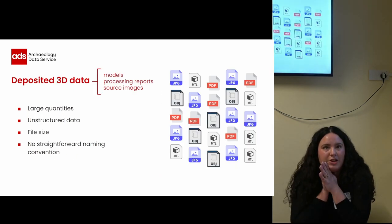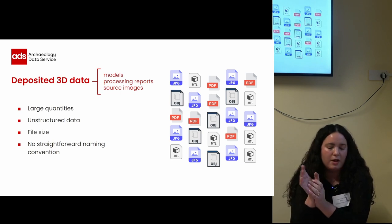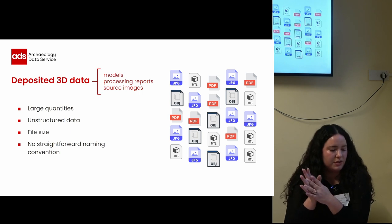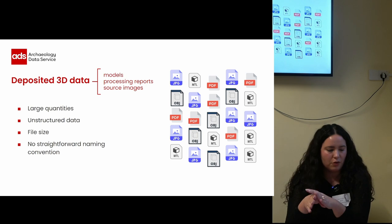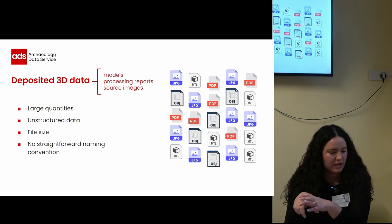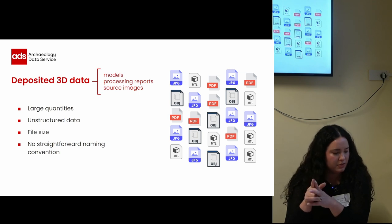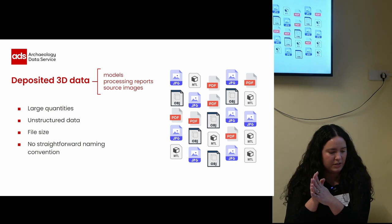So earlier this year, the digital outputs from the archival program in the Curzon Street area were deposited at the ADS. We received large quantities of unstructured data and big files with no straightforward naming convention. And these included 3D data in the form of 18 models, 18 processing reports and around 2000 photogrammetry source images.